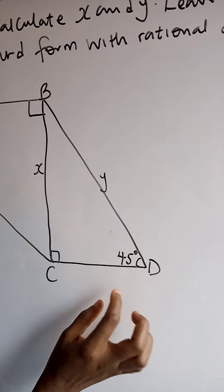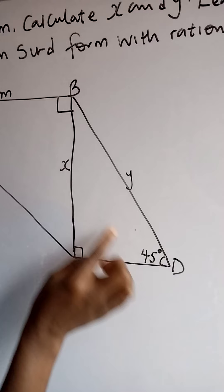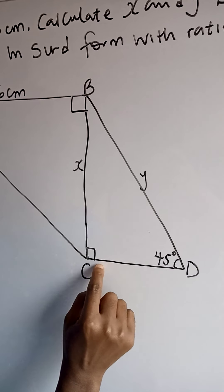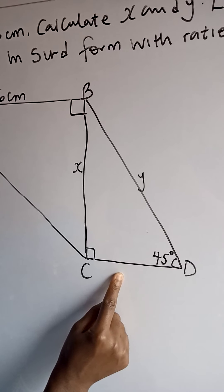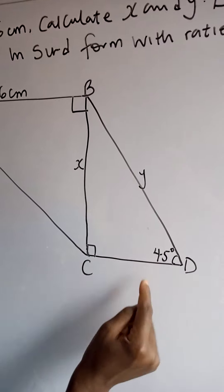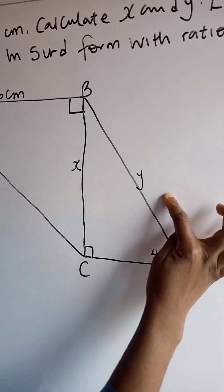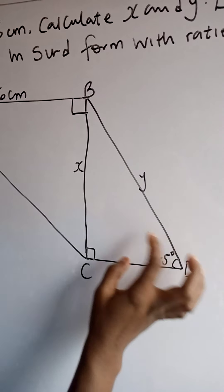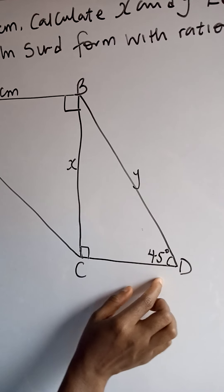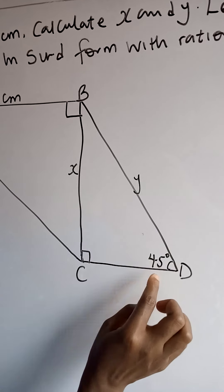The same thing is applicable to the 45 degrees. In this part of the question, we are given the opposite angle to X, and the opposite angle of 90 degrees gives the hypotenuse. So that means we are given the opposite and the hypotenuse, and the formula for opposite over hypotenuse is sine. So we are making use of sine 45 degrees.